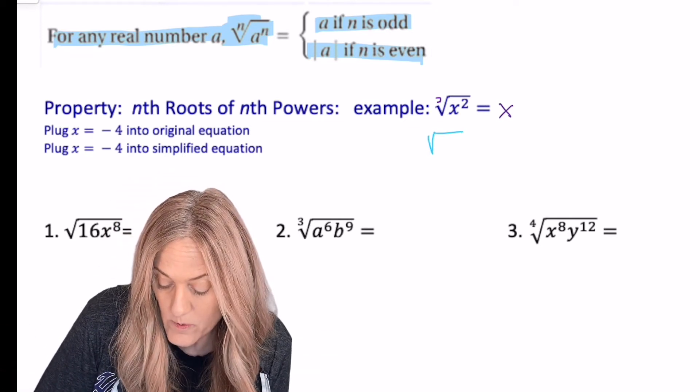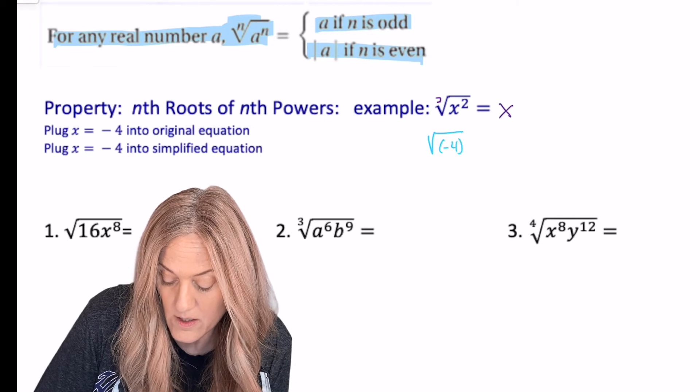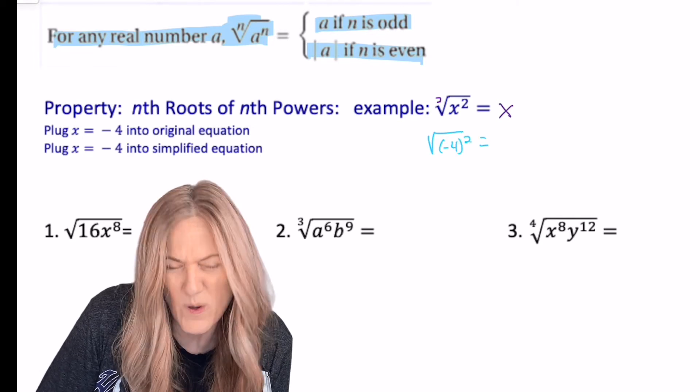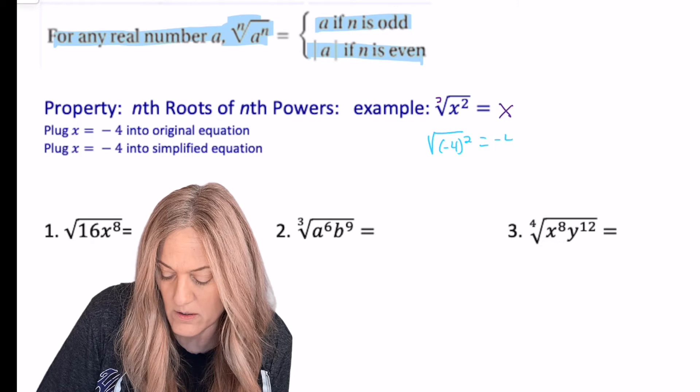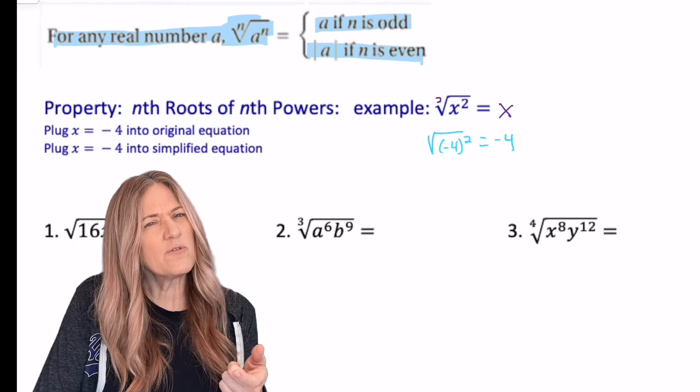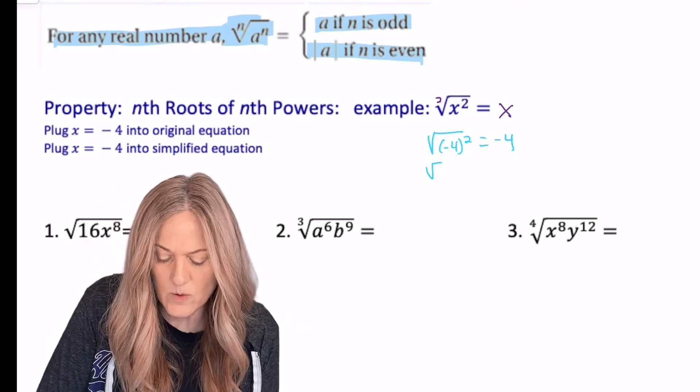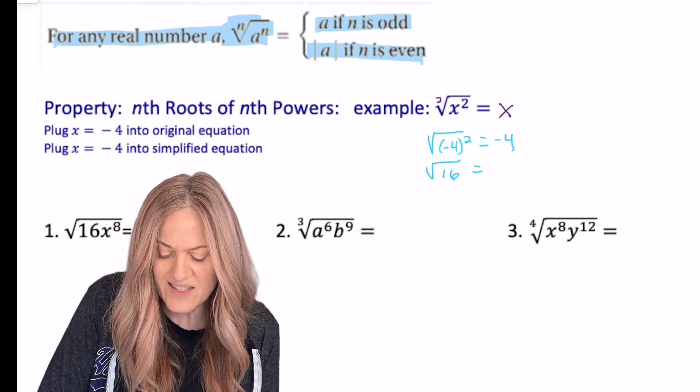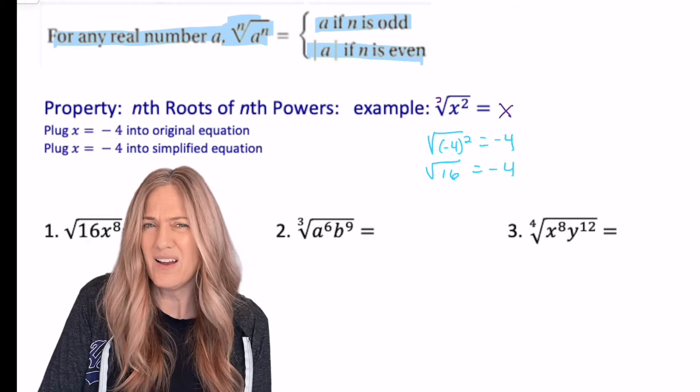Square root of negative four squared should equal what value for x? Negative four. So I just plugged in negative four for x in both spaces. But here, negative four quantity squared, well, that's the square root of 16. But it says that it equals negative four. No, it doesn't.